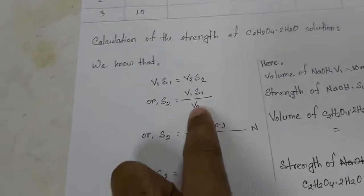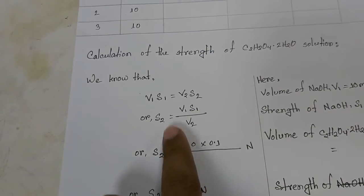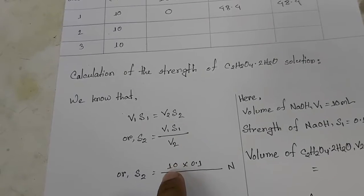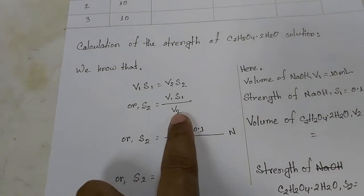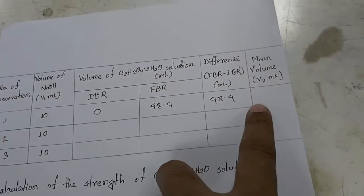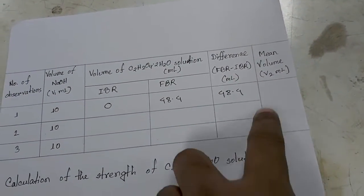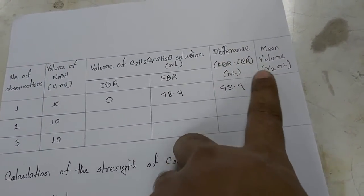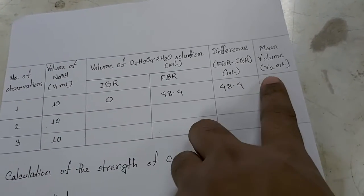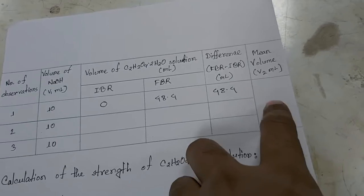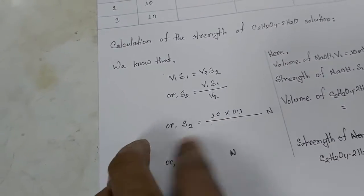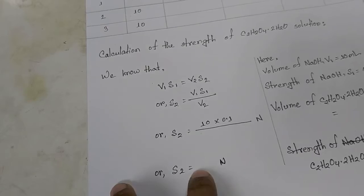By using the equation v1s1 = v2s2, we know the volume of sodium hydroxide taken was 10 ml, concentration was 0.1 normal. The volume v2 is the mean of three titration volumes we got to neutralize the base solution with acid solution. This v2 will be written here and finally we will get s2.